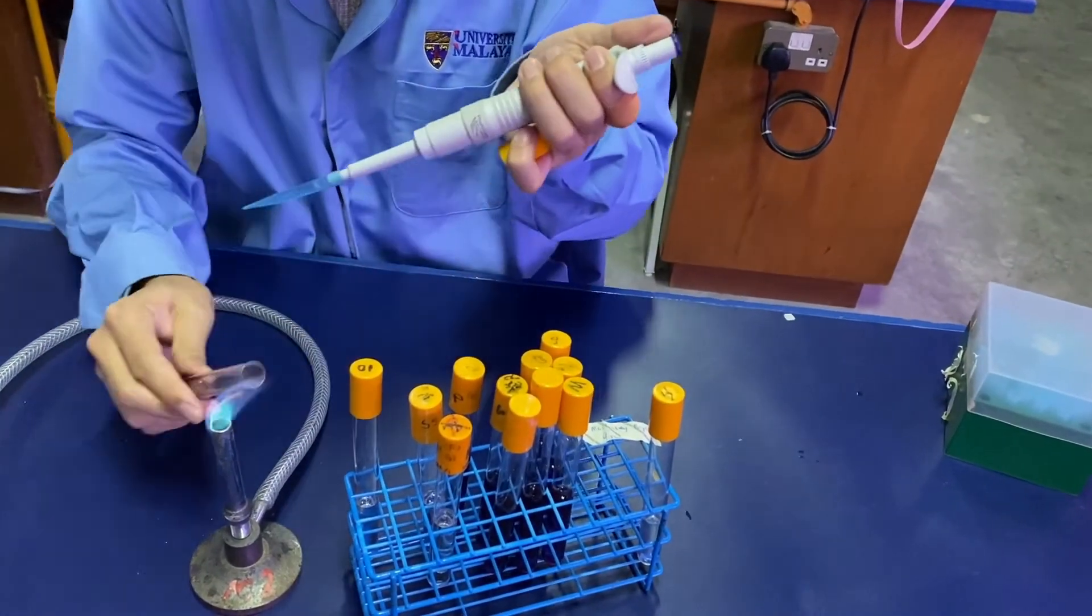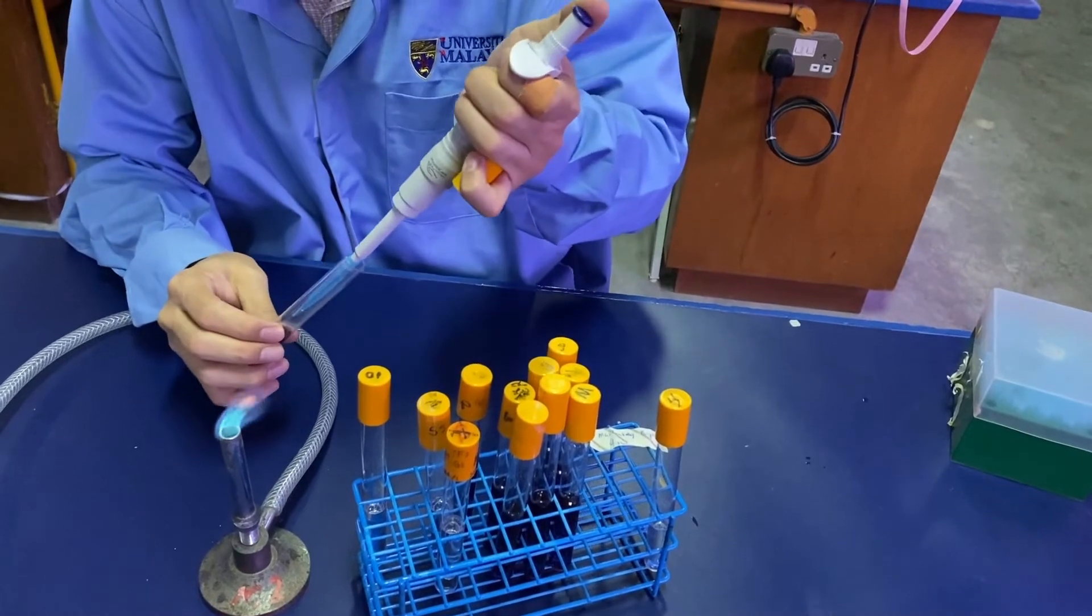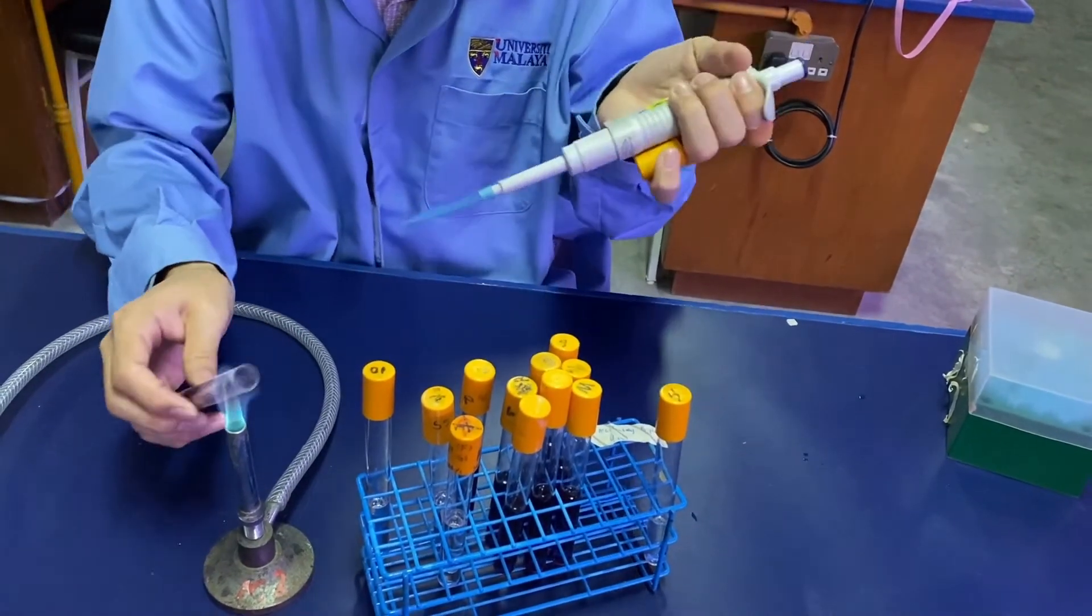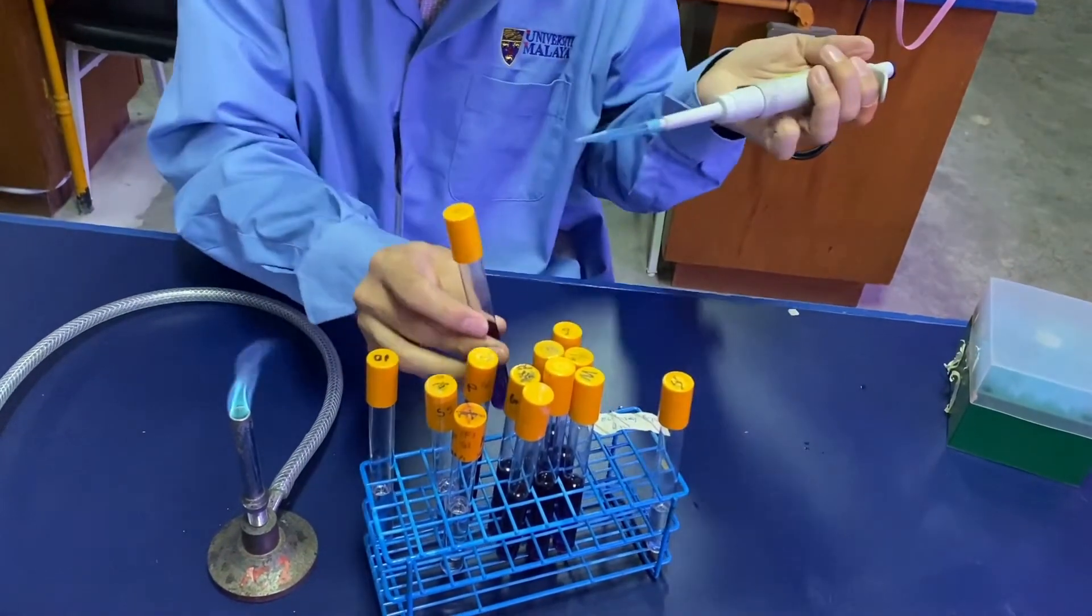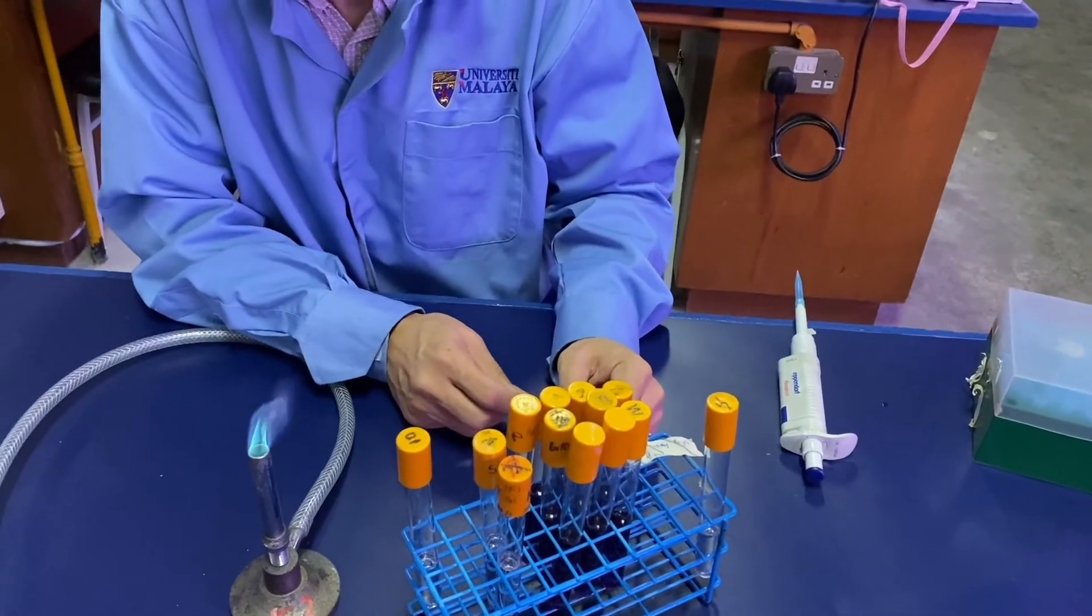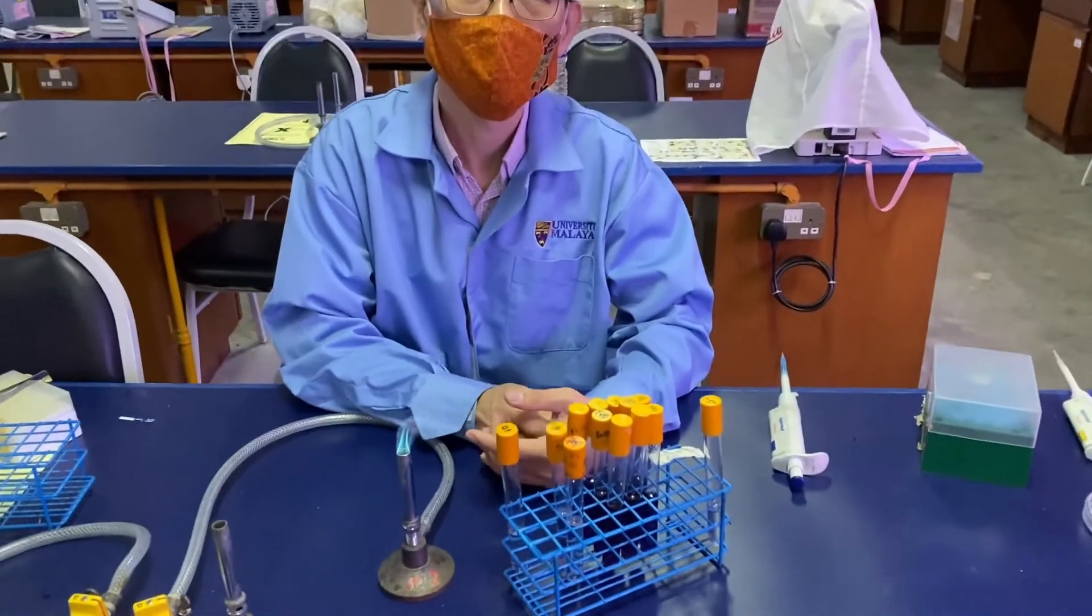One milliliter each from the sample tube to the MPN tube. Once you've done everything, you can incubate them.